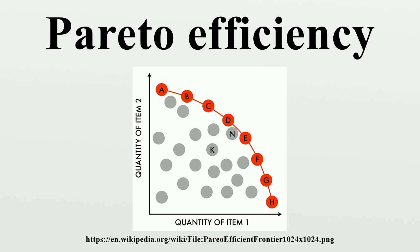Given an initial allocation of goods among a set of individuals, a change to a different allocation that makes at least one individual better off without making any other individual worse off is called a Pareto improvement. An allocation is defined as Pareto efficient, or Pareto optimal, when no further Pareto improvements can be made.